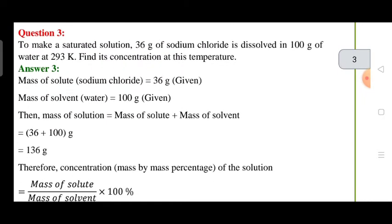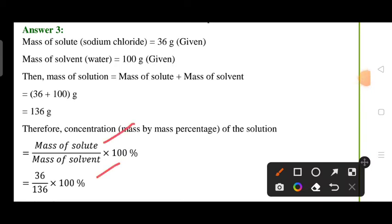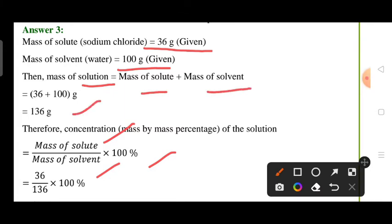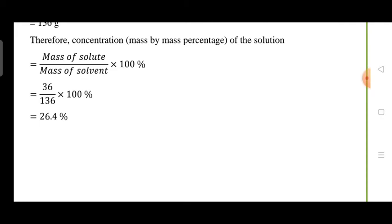Next question is a numerical: to make a saturated solution at 293 Kelvin, find its concentration. To calculate concentration, use the formula: mass of solute divided by mass of solution, multiplied by 100. Here, the mass of solute is 36 grams and the mass of solvent is 100 grams, giving a concentration of 26.4%.